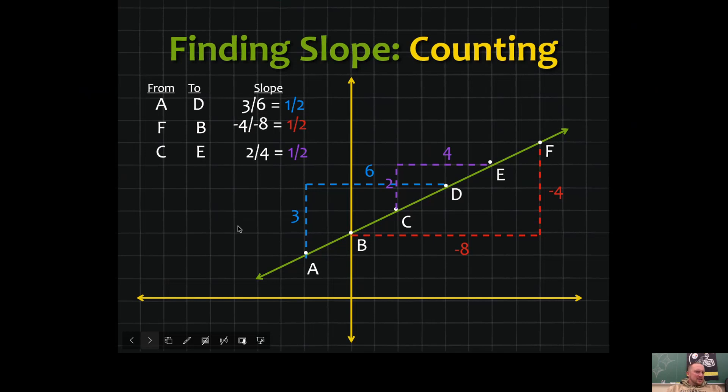Now, this isn't listed on here, but what if we went from point A to point B? You're going up one and two to the right—it's the same slope. Finding slope or steepness is the same thing as counting vertically and counting horizontally.